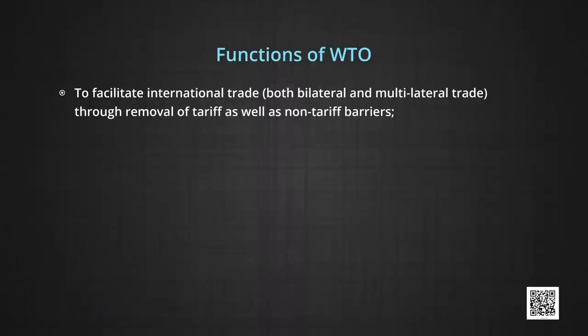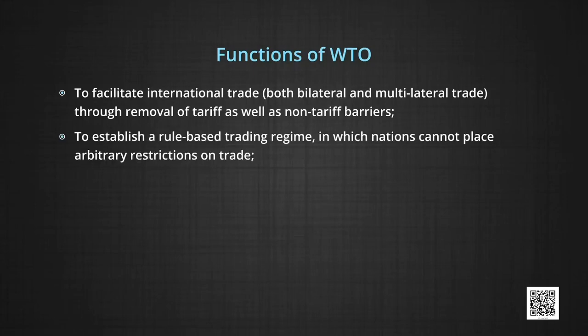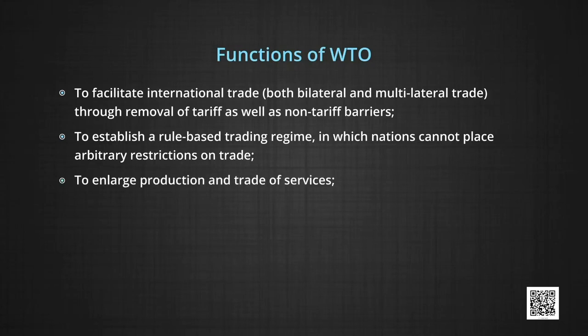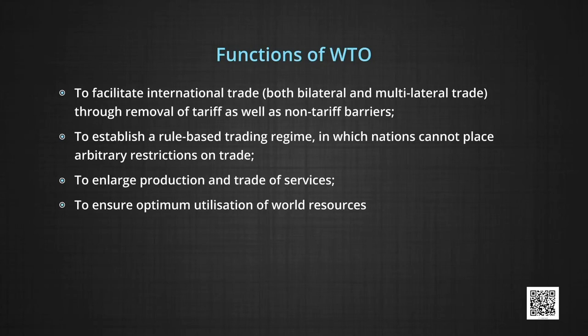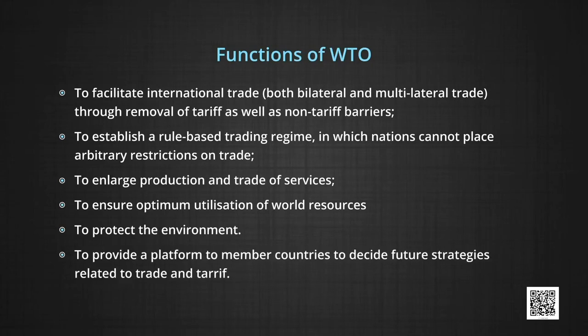Functions of WTO: Number 1, to facilitate international trade — both bilateral and multilateral — through removal of tariffs as well as non-tariff barriers. Number 2, to establish a rule-based trading regime in which nations cannot place arbitrary restrictions on trade. Number 3, to enlarge production and trade of services. Number 4, to ensure optimum utilization of world resources. Number 5, to protect the environment. Number 6, to provide a platform to member countries to decide future strategies related to trade and tariff.